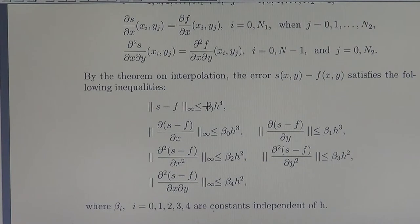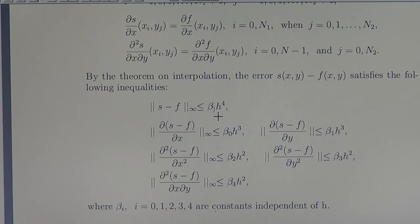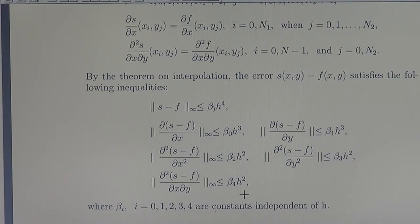By the theorem on interpolation — we recall this theorem published by Hall — the error of interpolation satisfies the following inequality. The error in the infinity norm is bounded by a constant times H to the power 4. We also have estimates for the derivatives: the first derivatives are bounded at order H cubed with respect to X and Y, the second derivatives at H squared, and the mixed third derivatives also at H squared.